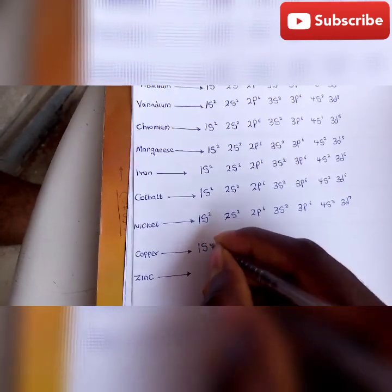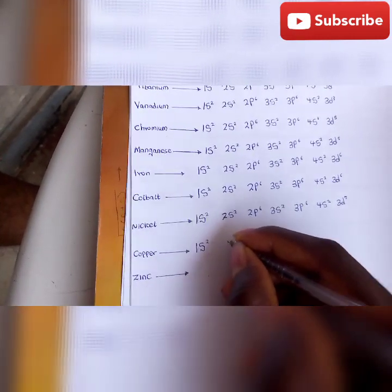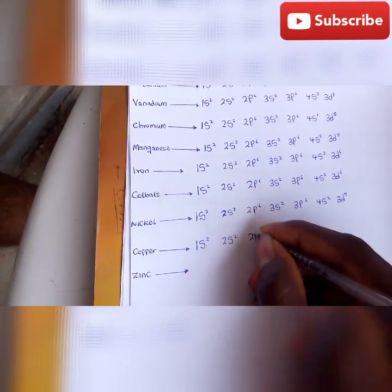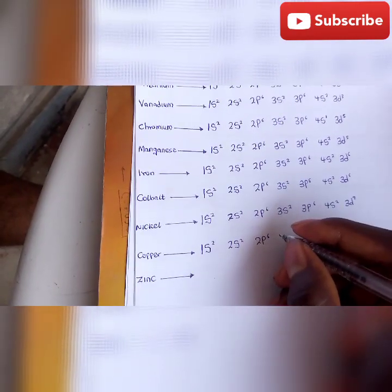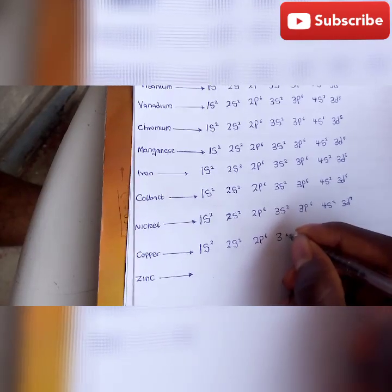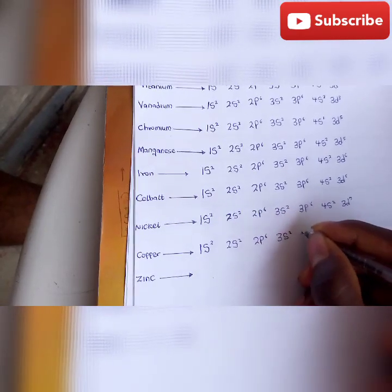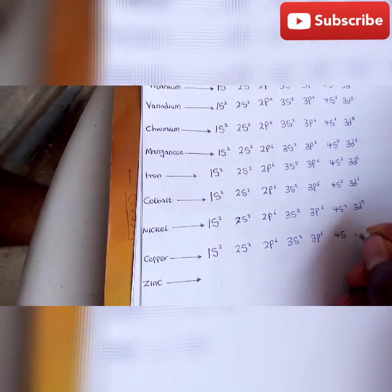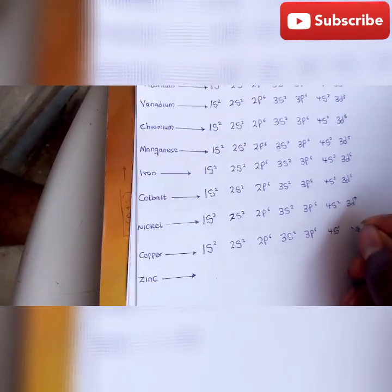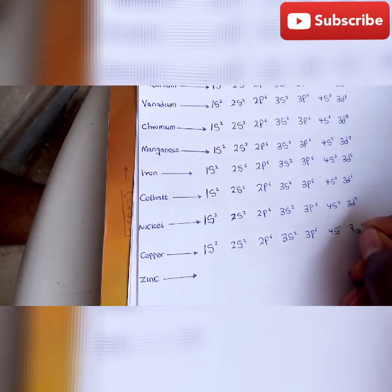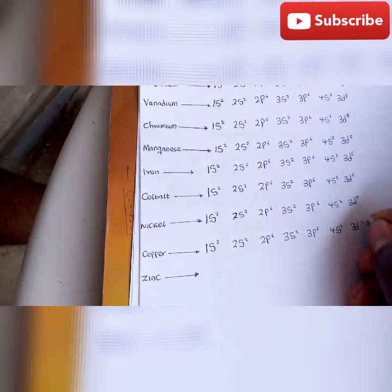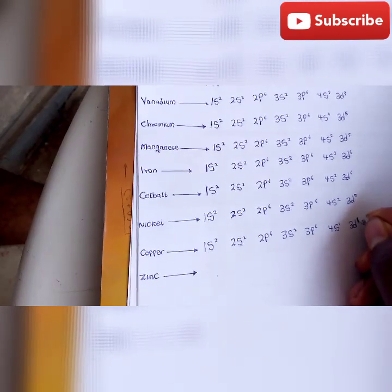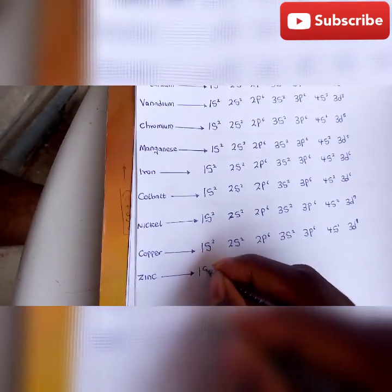Here is another exception, copper: 1s² 2s² 2p⁶ 3s² 3p⁶. Instead of filling the 4s with 2 electrons, it's going to be 1: 4s¹. Instead of being 3d⁸, it should be 3d⁹. So we are in the last one: zinc.